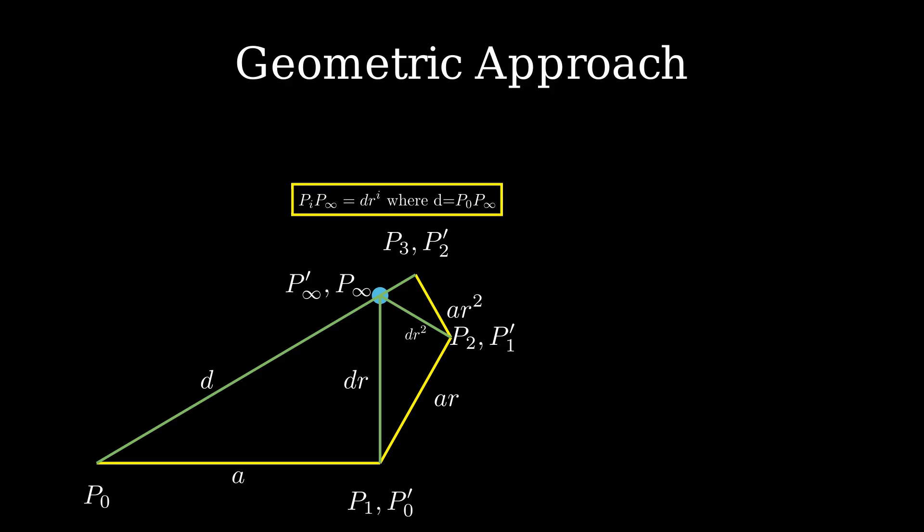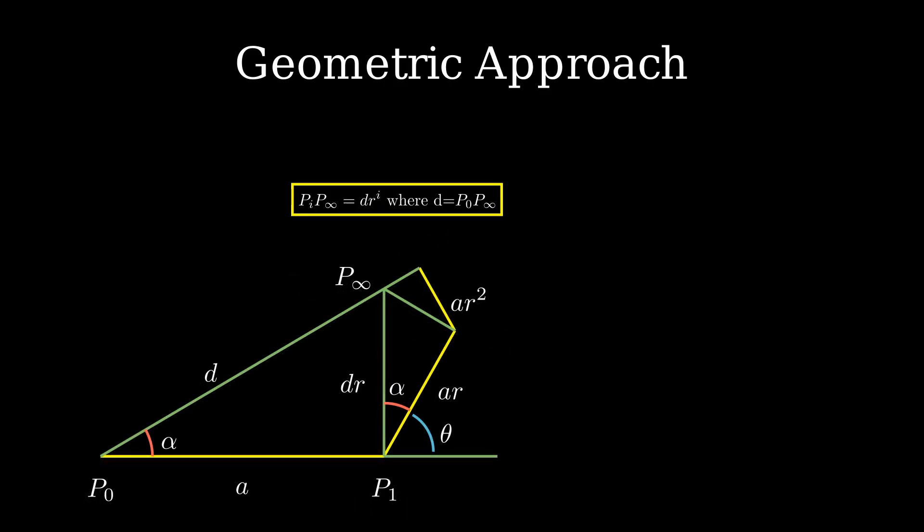Let's move on to some angles. We emphasize the similarity once again of the various triangles. For example, P infinity P0 P1 is similar to P infinity P1 P2. Observe that the angle theta will also equal angle P0 P infinity P1 due to the exterior angle property in triangle P0 P infinity P1.